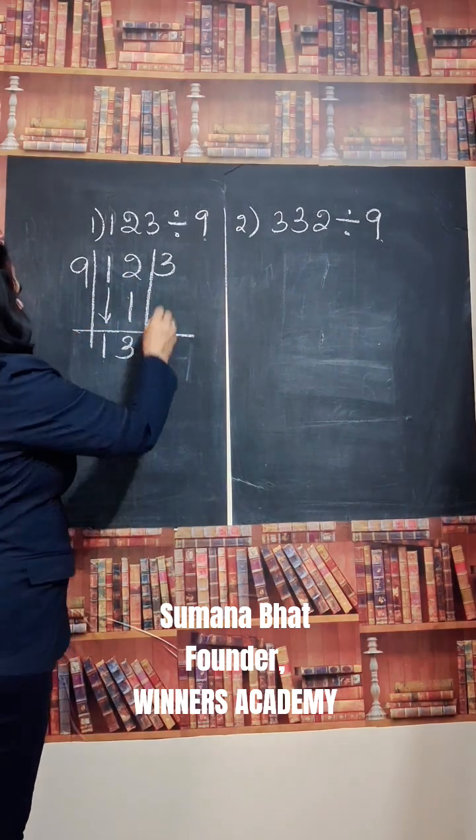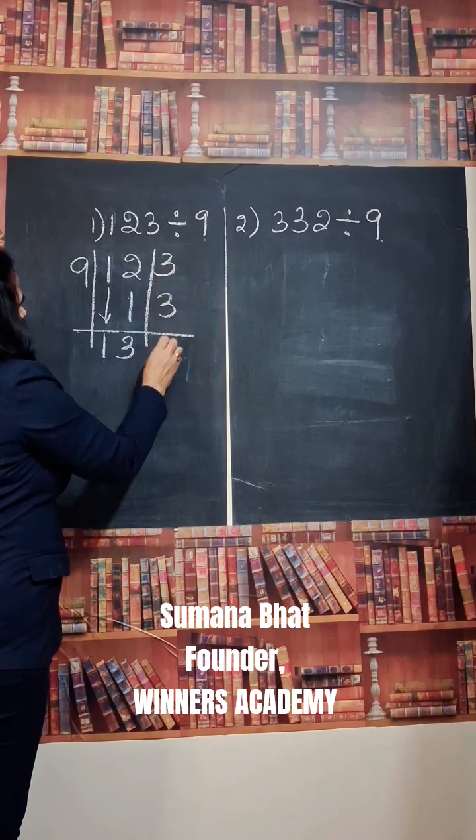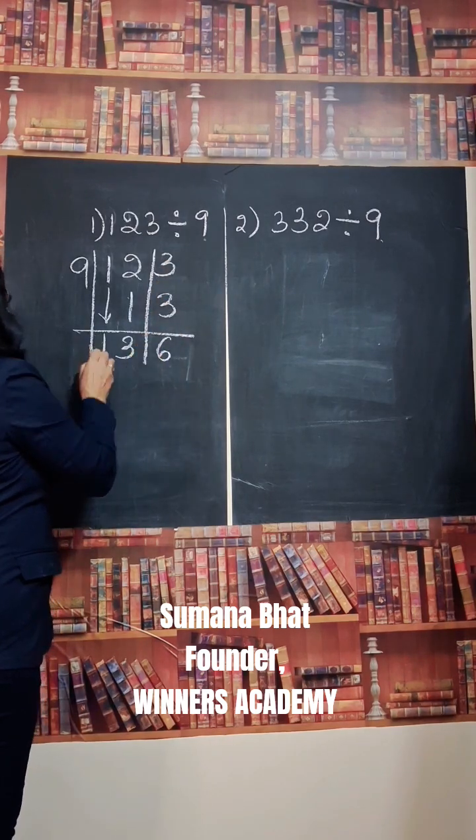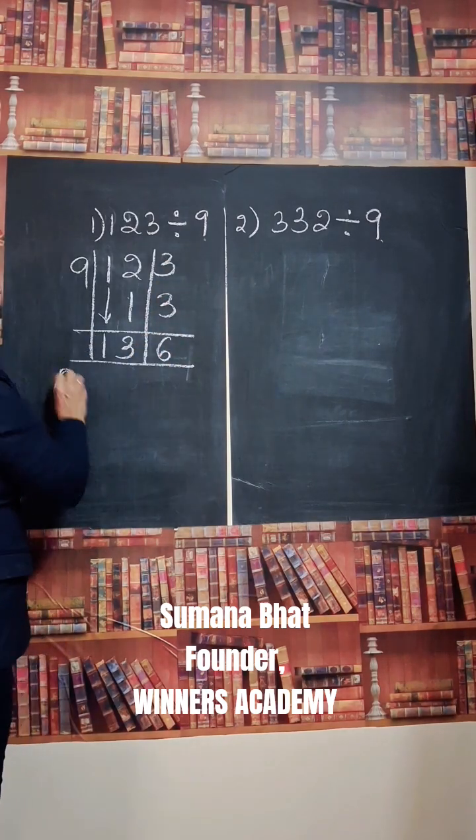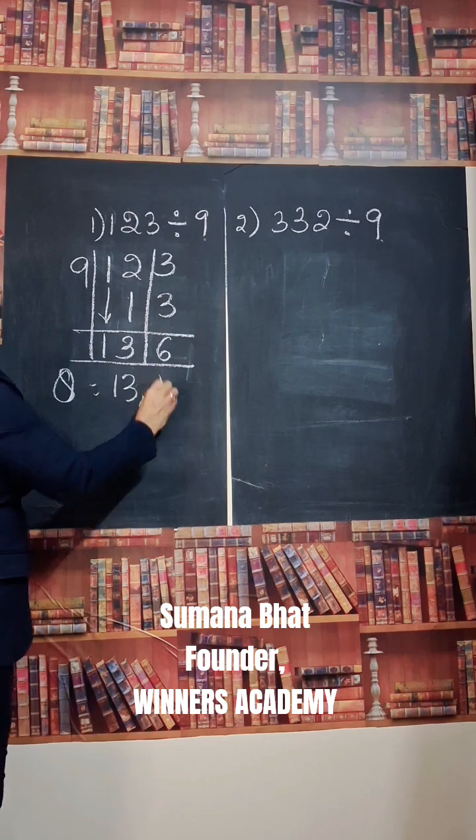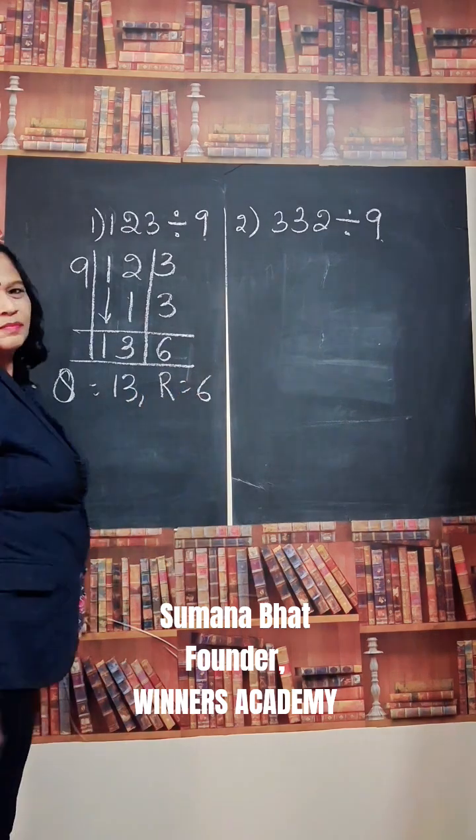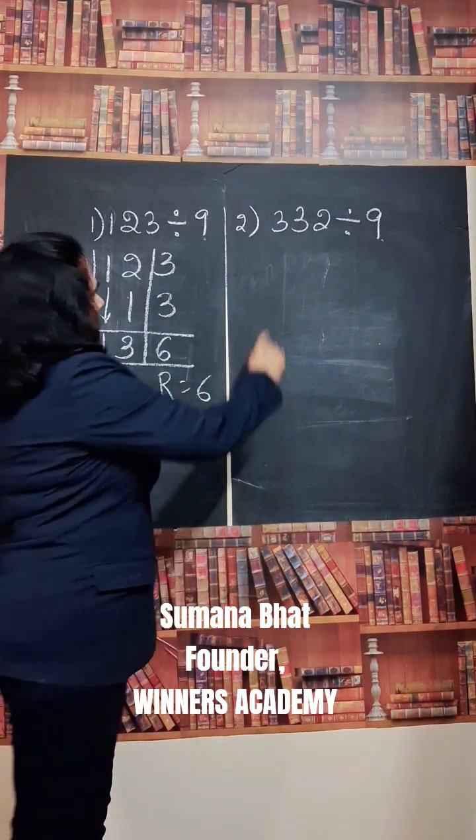Write this 3 below the next number. 3 plus 3, 6. So, quotient is 13, remainder is 6.